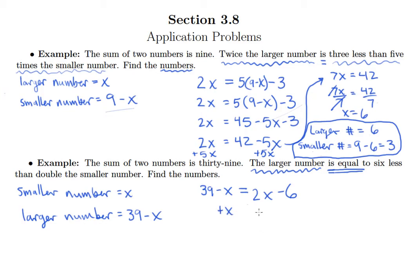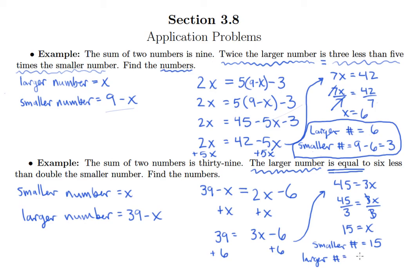So we need variables on the same side. So 39 equals 3x minus 6. I can add 6 to both sides. And I'll continue over on this side here. So we have 45 equals 3x, and then I can divide both sides by 3, giving me 15 equals x. But again, I need to make sure that I'm answering the question that's asked. So we know that the smaller number equals 15. And so the larger number is 39 minus 15. So that's going to give me 24.